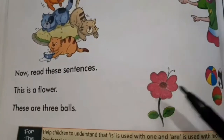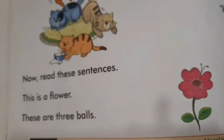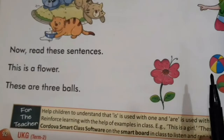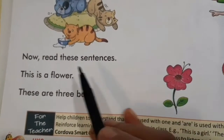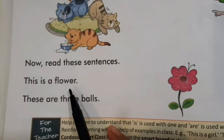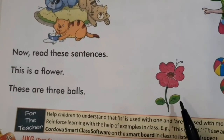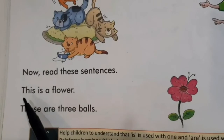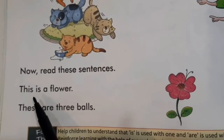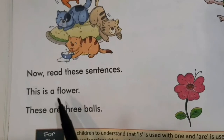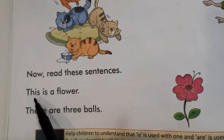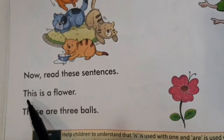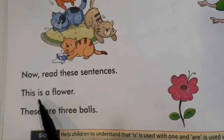Now children, we read further. Aaghe hum read karte hain. Now, read these sentences. Yeh haan peh hum aur sentences read karenge. 'This is a flower.' Yeh haan peh humay ek flower dikhahi de raha hai. Kitne flowers hain? One. So yeh haan peh likha hai: 'This is a flower.' 'This' bhi ek chiz ke liye use karte hain, aur 'is' bhi ek chiz ke liye use karte hain.